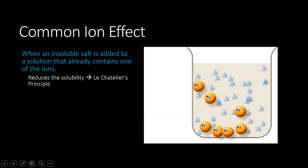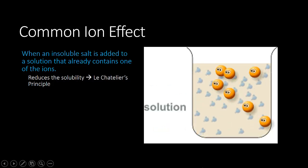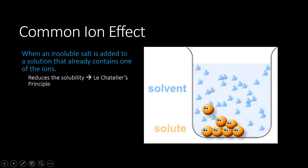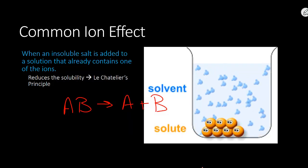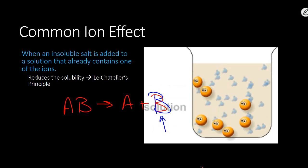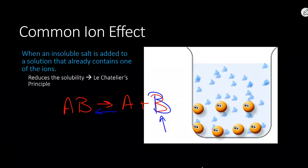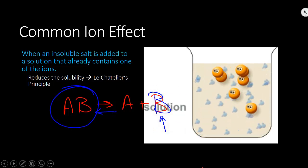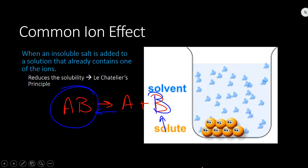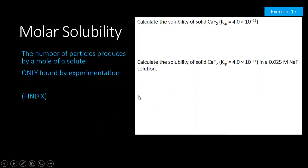When you dissolve two things together, it's possible that one might interfere with the other — known as the common ion effect. If a reaction of AB breaking into A⁺ and B⁻ already has some B⁻ present, that shifts the reaction via Le Chatelier's principle towards more insoluble salt forming. Common ions occur when an insoluble salt shares an ion with something already in solution. Example 17 in your packet illustrates this with calcium fluoride.